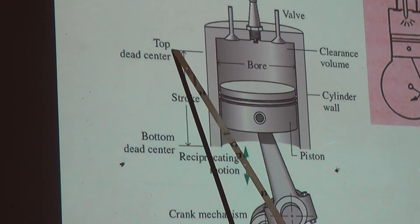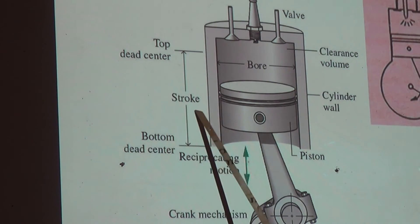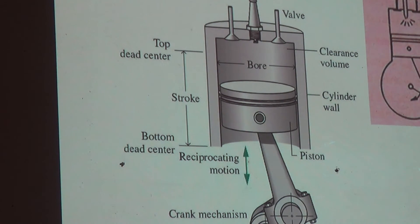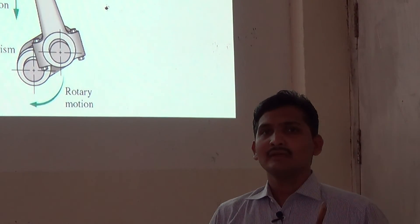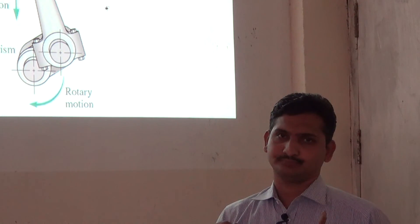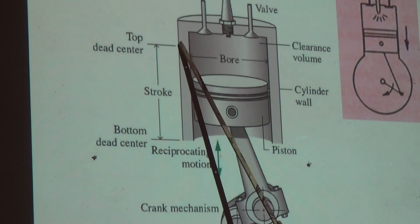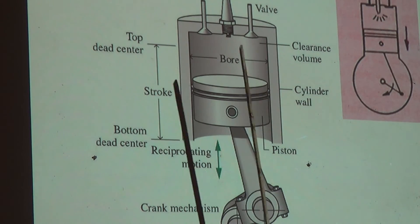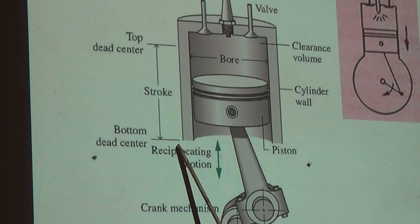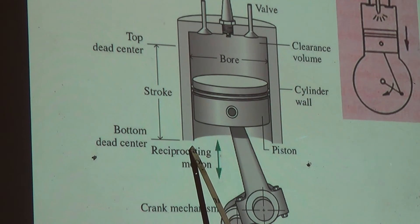There are two points: one is called top dead center and another is called bottom dead center. The distance between top dead center and bottom dead center is called the stroke. Now, what is meant by dead center? Dead center is a point where piston velocity will be zero. At the top point piston velocity is zero — that is called the top dead center. At the bottom point piston velocity is zero — that is called the bottom dead center.